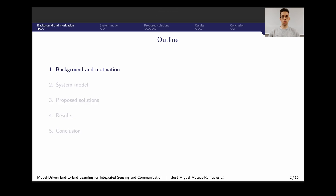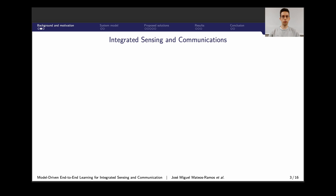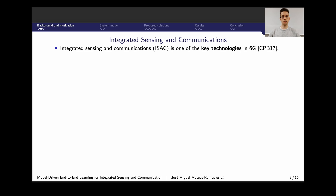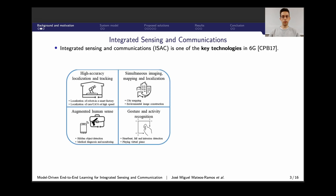Integrated sensing and communications, or ISAC for short, is envisioned as one of the key technologies in 6G. 6G is expected to operate at higher carrier frequencies, which brings higher data rates and smaller antenna sizes. Moreover, this shift to higher carrier frequencies allows communication applications to meet already deployed radar solutions, giving rise to ISAC. ISAC brings new functionalities such as digital twins for manufacturing, simultaneous mapping and localization for vehicle applications, and activity recognition.